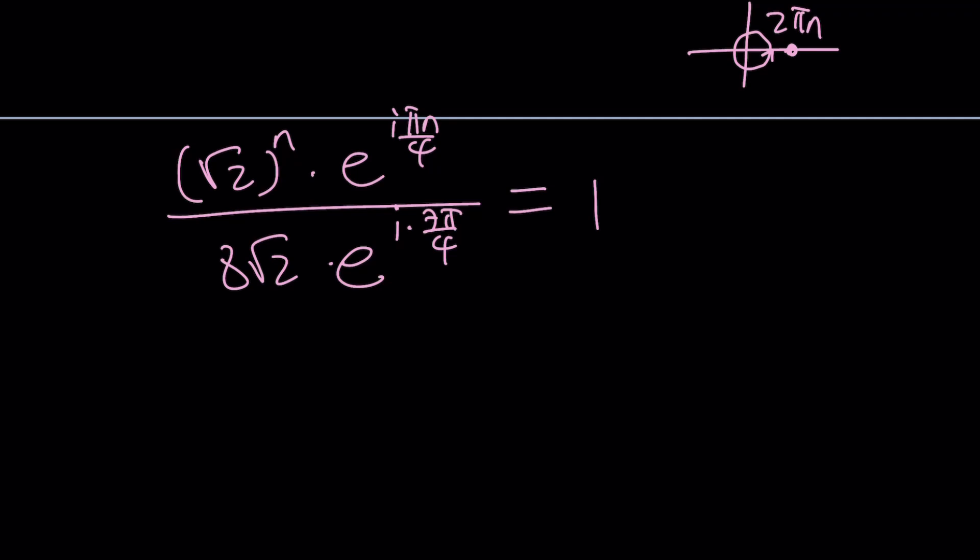In other words, the θ is 2π multiplied by n. Wait a minute. We used n. Let's just use k here. So 2πk is going to be our argument.